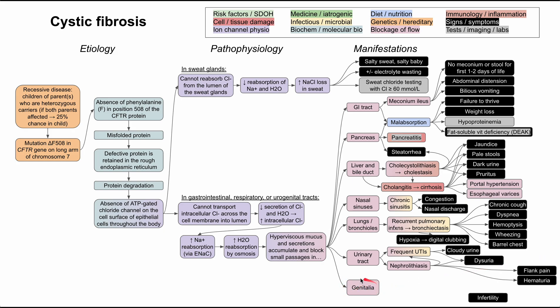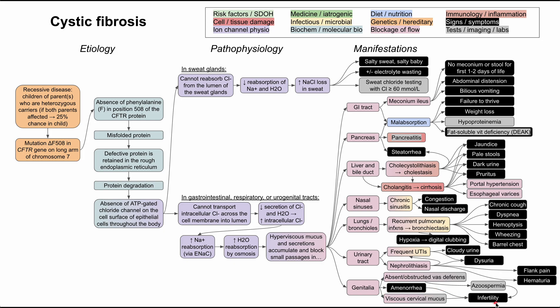Lastly, the genitourinary tract is affected in both men and women, leading to infertility. In men, the vas deferens — the tube that carries sperm from the testicles to the urethra — can be obstructed or even absent if it's obstructed during development. This results in azoospermia, meaning low or no sperm in the ejaculate, causing infertility. In women, there is extra viscous cervical mucus — just like all other secretions in cystic fibrosis — which can result in infertility. Women with cystic fibrosis can also have amenorrhea, which further predisposes them to infertility.